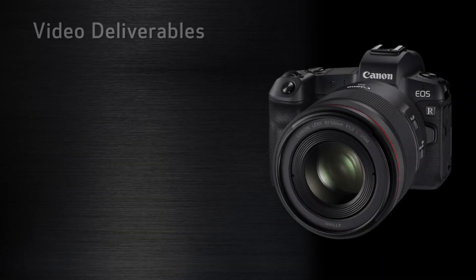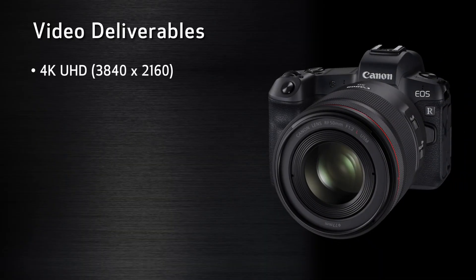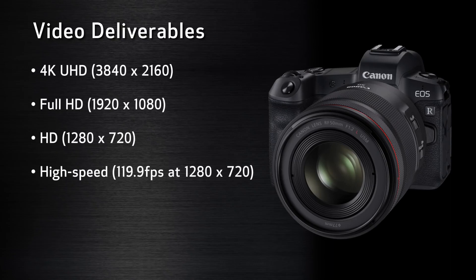Hi, I'm Brent Ramsey from Canon USA. In this video we'll take a look at some of the video features of the EOS R and mainly we'll look at the deliverables: 4K UHD, Full HD, High Speed, HDR movies, time-lapse. We'll examine recording options and also some of the key features Canon has integrated into the EOS R to ensure you get solid video performance and outstanding image capture.